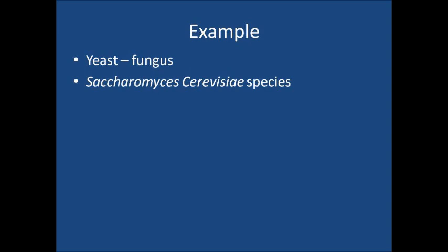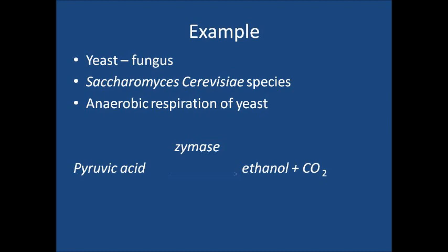For example, Saccharomyces cerevisiae is a species of the yeast fungus commonly used in the production of alcohol. Zymase, a complex of enzymes found in this species, converts pyruvic acid to ethanol and carbon dioxide.